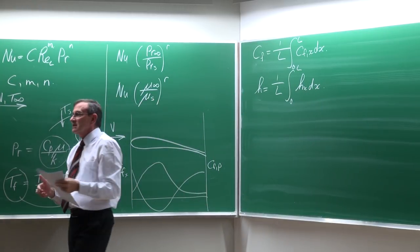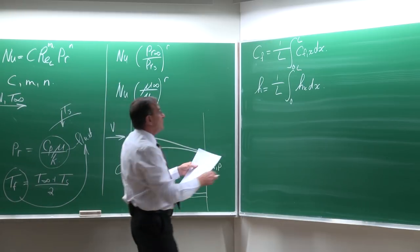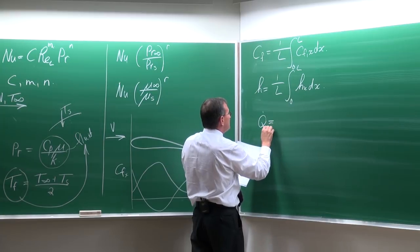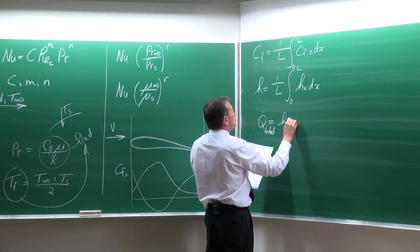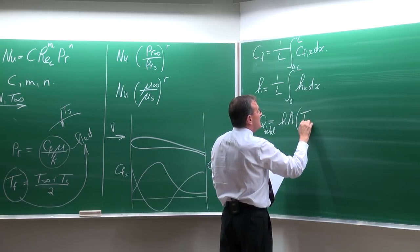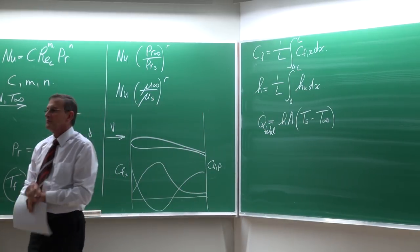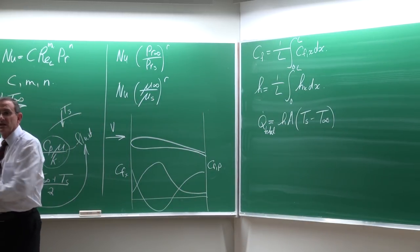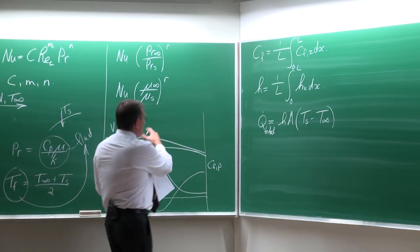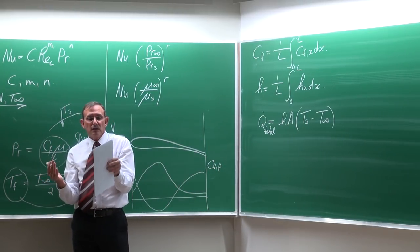The average heat transfer coefficient is determined by integrating the local values from 0 to L and dividing by the total length. Once we have this average heat transfer coefficient, the total heat transfer rate equals the heat transfer coefficient multiplied by the area multiplied by the surface temperature minus the free stream temperature. This shows the analogy between drag and heat transfer is exactly the same.